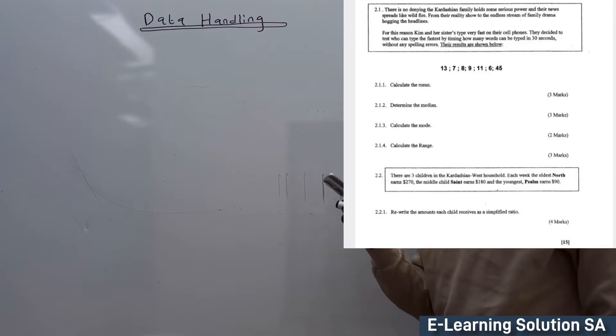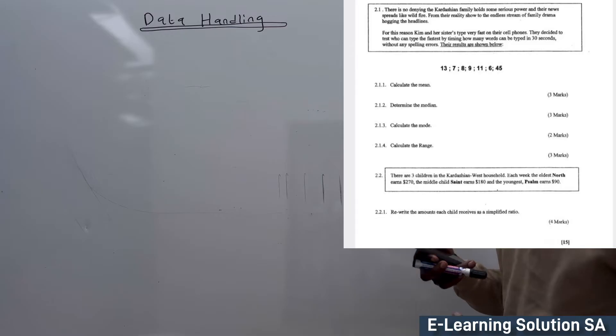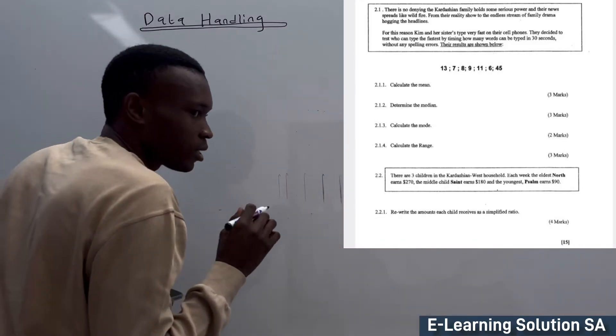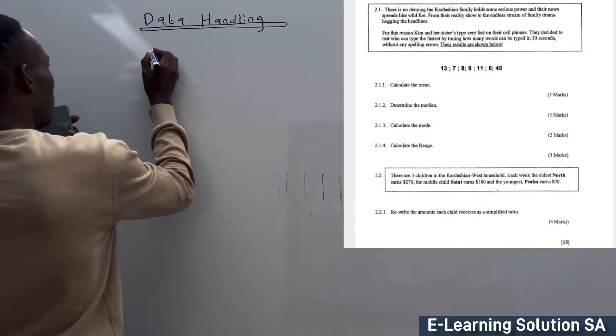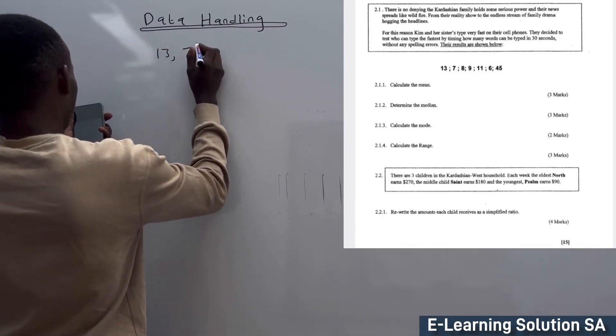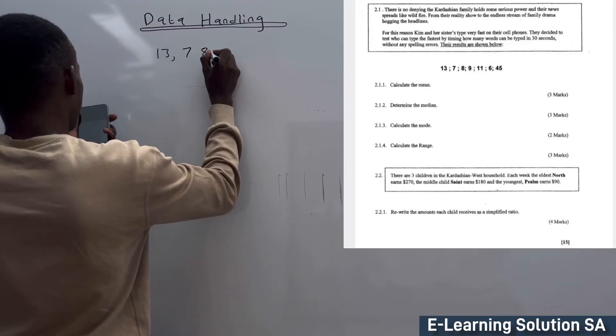The results are shown below. I'm going to write this down so that when we answer the question it's going to be simple. It's 13, 7, 8, 9, 11, 6, and 45.